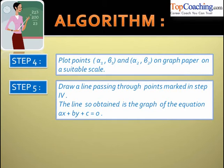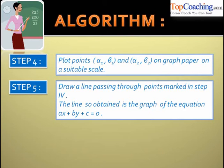To summarize: first, obtain the equation. Second, write y in terms of x. Third, assign two values to x and obtain the corresponding two values of y, choosing integral values where possible. Fourth, plot the two points (α₁, β₁) and (α₂, β₂) on graph paper. Fifth, join these two points by a line — this line is the graph of the equation ax plus by plus c equal to zero.